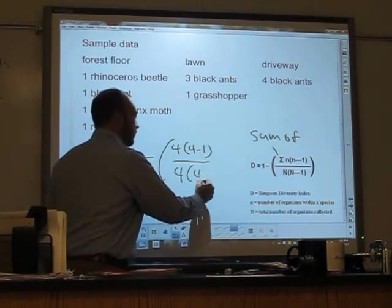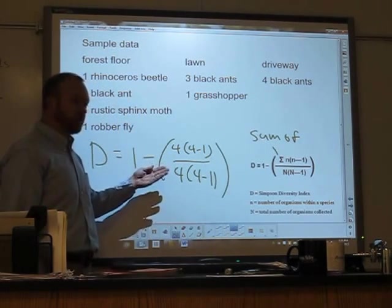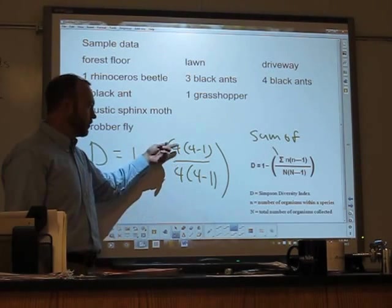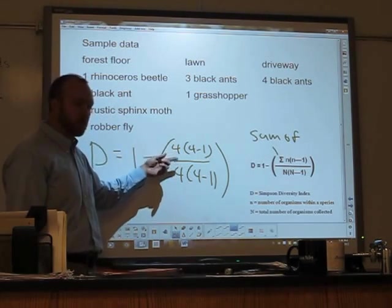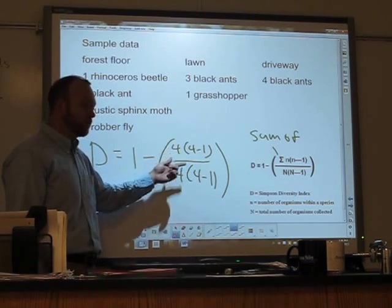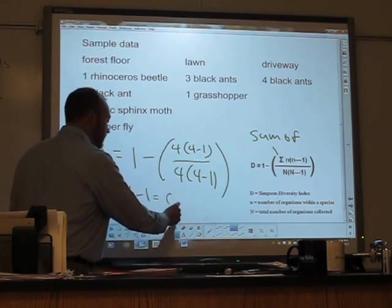And then I have four minus one. The total number of organisms collected was four, and then I have four minus one. I think that you can see that the top and the bottom here are the same. So it's going to come out to be one. If you want to go through it, you can do four times three is twelve, four times three is twelve. Twelve over twelve is one.